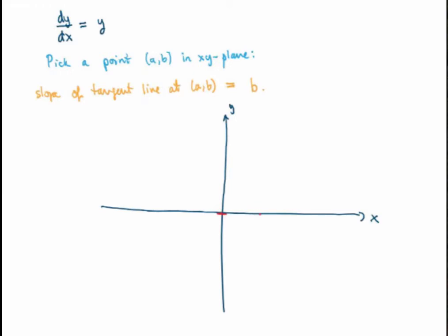If I pick any point on the x-axis, I get the same thing because the y-coordinate is 0, so they're all horizontal. If I pick the point x=0, y=1, the slope of the tangent line is 1 — a 45-degree slope — and I get the same for all points with y-coordinate 1. If I go to y=2 the slope is 2, which is steeper than 45 degrees. On the negative side, y=-1 gives slope -1, which is 45 degrees downward.